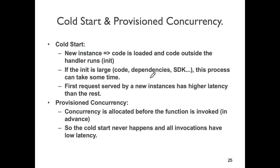The first application is essentially hogging the concurrency limit. However, if you set a reserved concurrency limit of, say, 100 on it, the other two applications won't get throttling errors. It's a balancing act, but it's probably a good idea to set some sort of reserved concurrency limit for any high-traffic application.